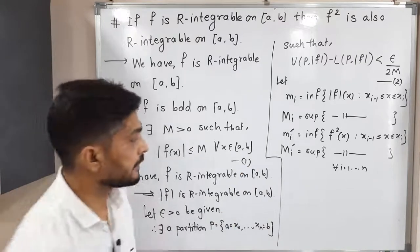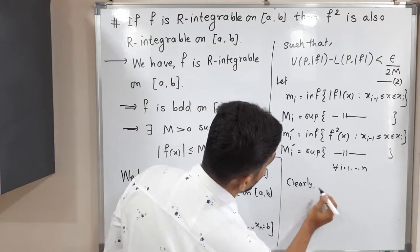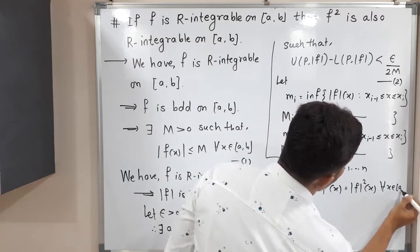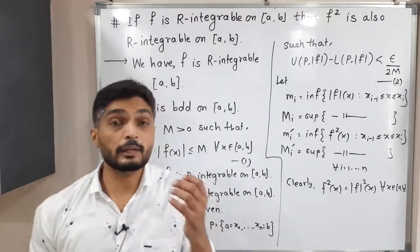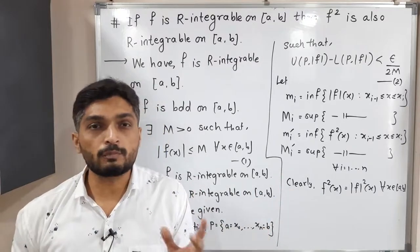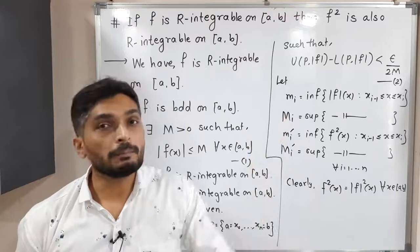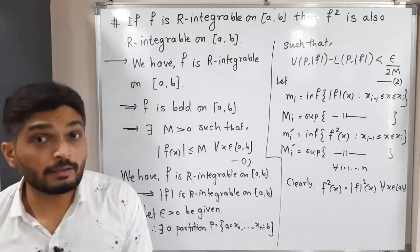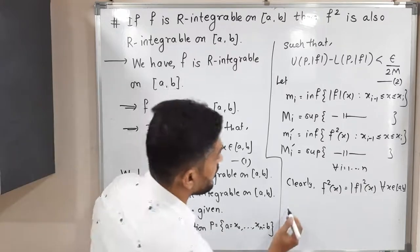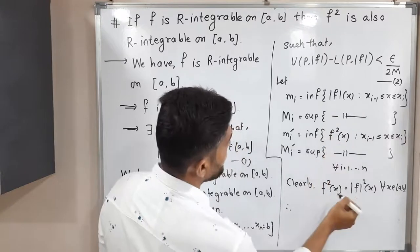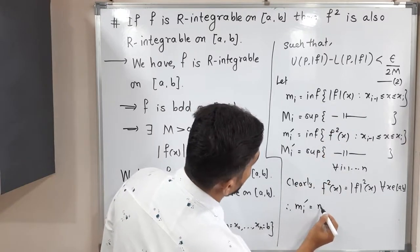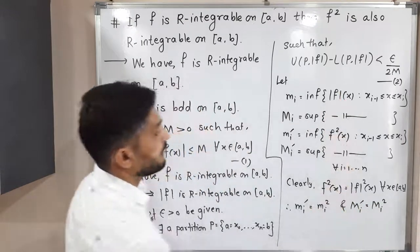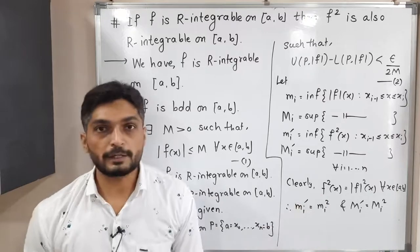One key observation: f²(x) = |f(x)|². Since squaring removes the sign just as taking modulus does, f² and |f|² have the same value. Therefore we can write mᵢ' = mᵢ² and Mᵢ' = Mᵢ². This gives us a direct relationship between the infimum and supremum of f² and those of |f| on each subinterval.